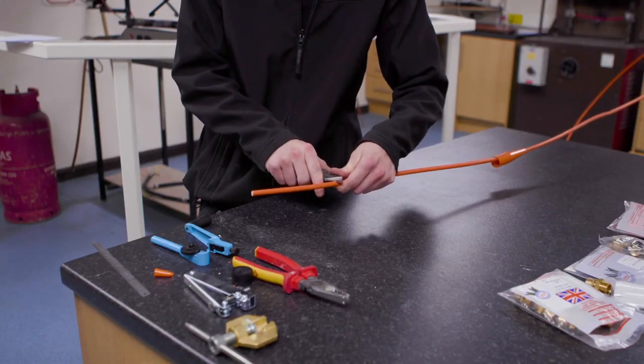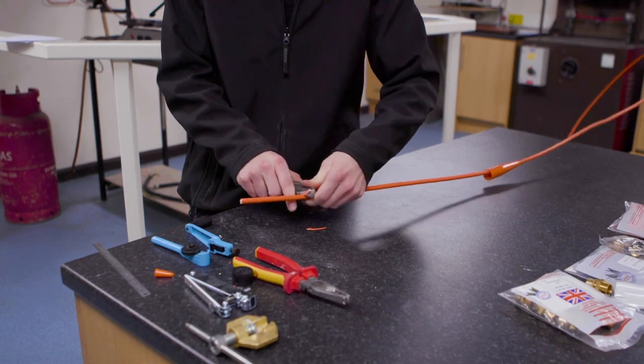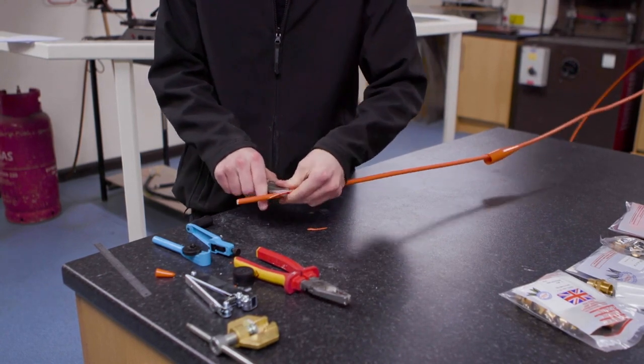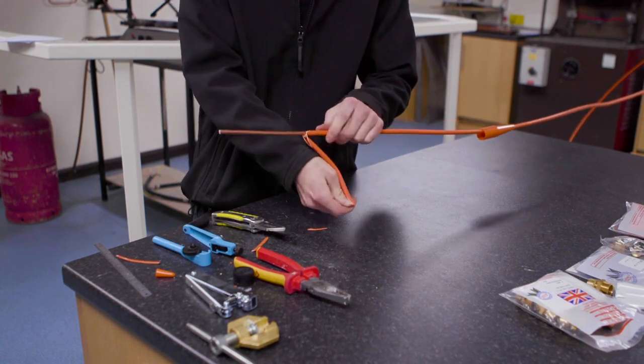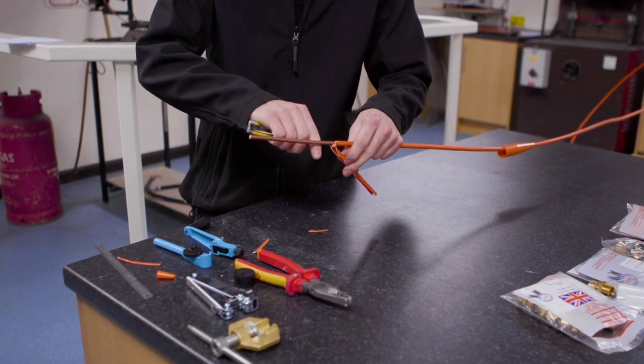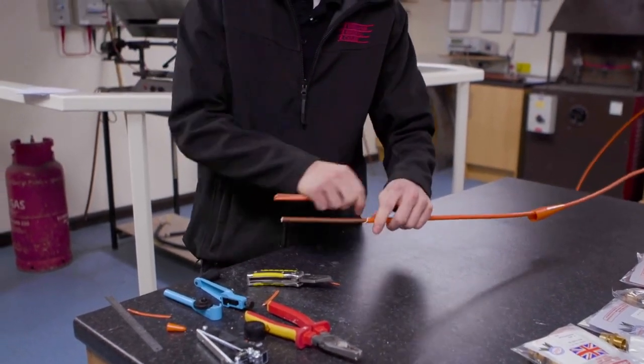Strip that back away from you, making sure you don't nick any of the copper cable. Pull it away from you and again, cutting away from you, just nip the outer sheath and pull it off.